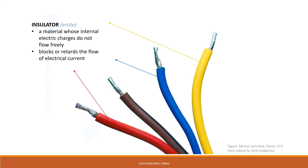Electric cables are made from a central wire which carries the electricity, wrapped in a plastic insulator to keep people from getting electric shocks. Insulators are materials like plastic, porcelain, and glass. In these types of materials, the atoms' electrons have very little freedom to move around. Electricity flows through them very poorly or not at all.